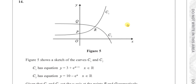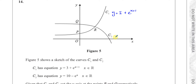This question has figure 5, which shows a sketch of the curves C1, which curves upwards, and C2, which curves downwards. C1 has the equation y equals 3 plus e to the power of x plus 1, and C2 has the equation y equals 10 minus e to the power of x.